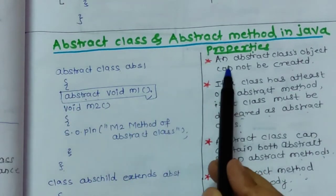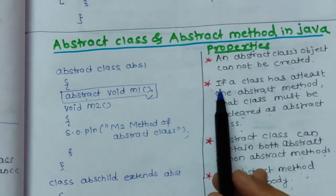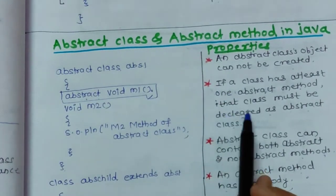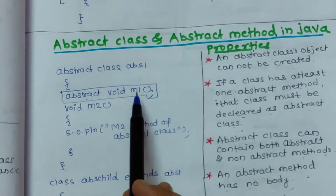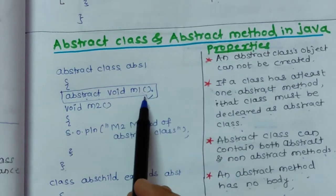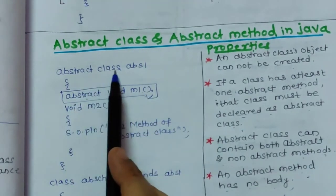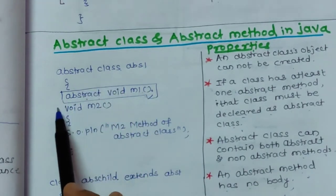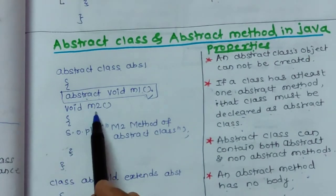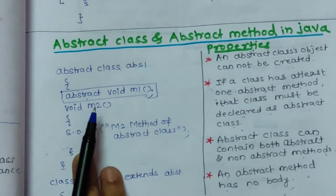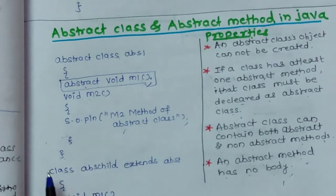The next property we discussed is that an abstract method should not have a body. So this is an abstract method and it does not have any body. Now an abstract class can have non-abstract methods also. So this is a non-abstract method in the abstract class.